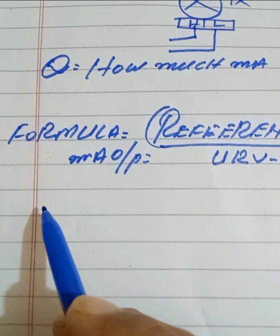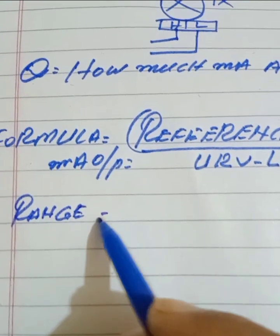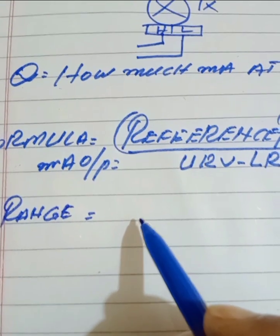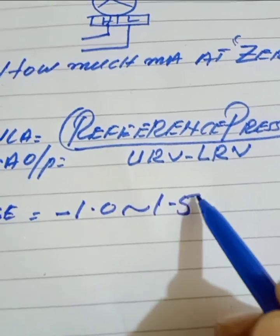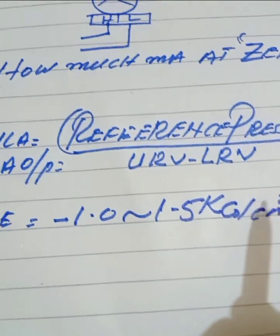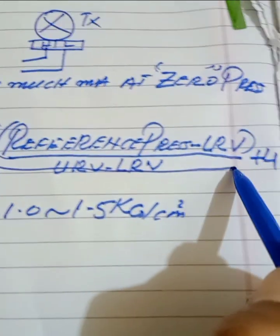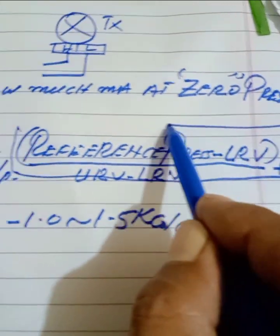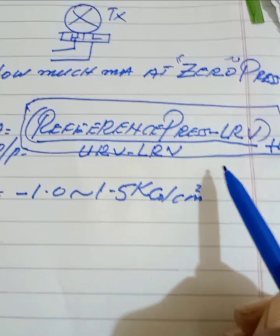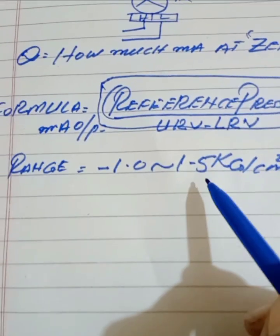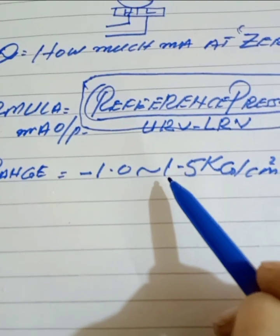Suppose our transmitter range is minus 1.0 to 1.5 kg per cm squared. As per this formula — reference pressure minus LRV, divided by URV minus LRV, multiplied by 16, plus 4 — we will calculate how much the current output of our transmitter. Our transmitter range is minus 1.0 to 1.5 kg per cm squared.